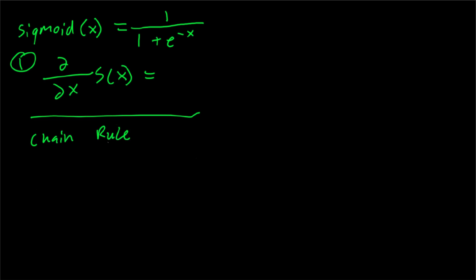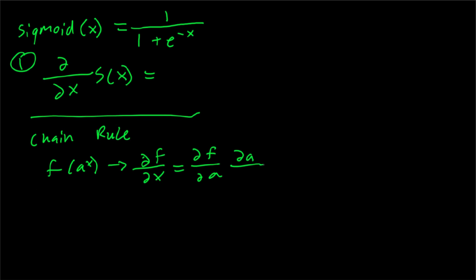As a quick reminder, the chain rule for a function f of a to the x states that the derivative with respect to x is equal to the derivative of f with respect to a times the derivative of a with respect to x. The denominator of the sigmoid function will use the chain rule. The derivative of 1 plus e to the negative x with respect to x is equal to negative e to the negative x. You can verify this — it's a common derivative.